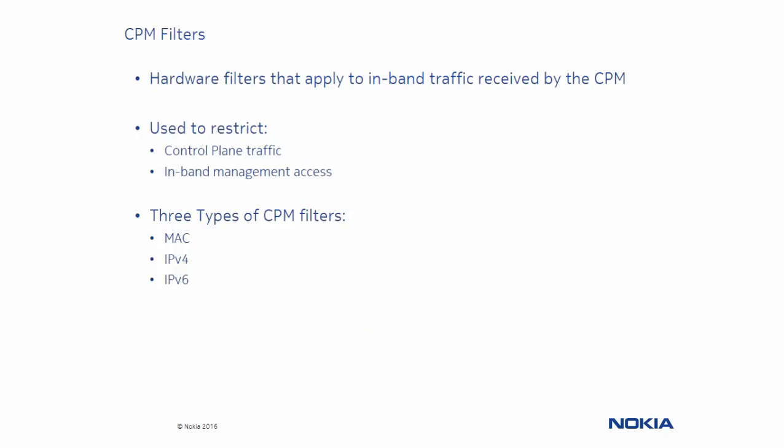Let's take a look at one of the ways we can protect the CPM from some of these common threats. CPM filters is a hardware filter used to restrict control traffic such as routing protocols based on IP or MAC addresses. They are also used to control management access where in-band management is used. Filters have to be manually configured for every single traffic flow type. There are three types of filters: MAC for layer 2, which is processed first, and then layer 3 filters for both IPv4 and IPv6.